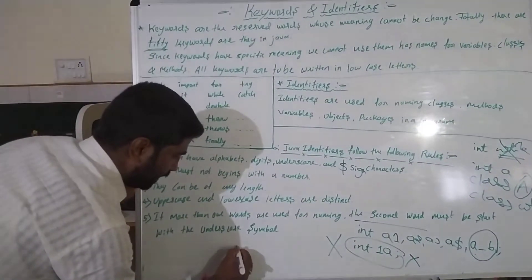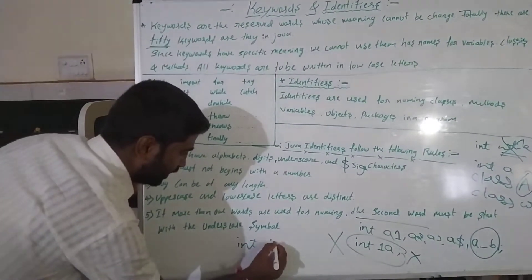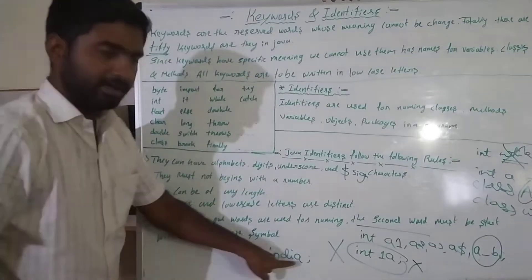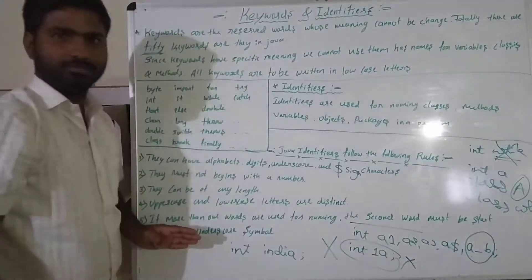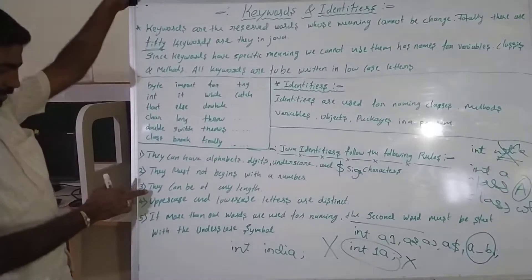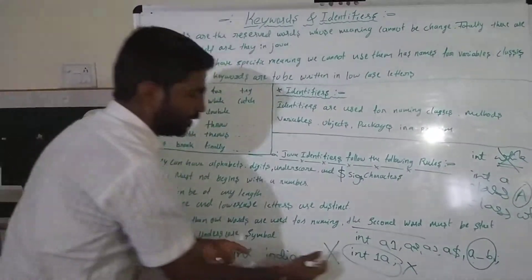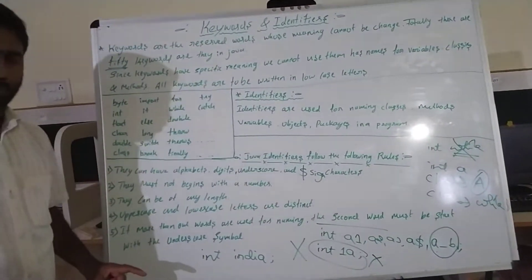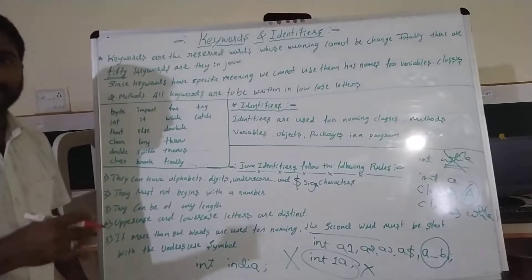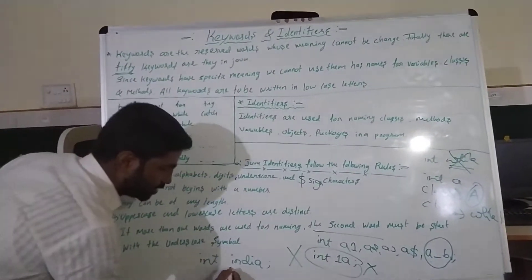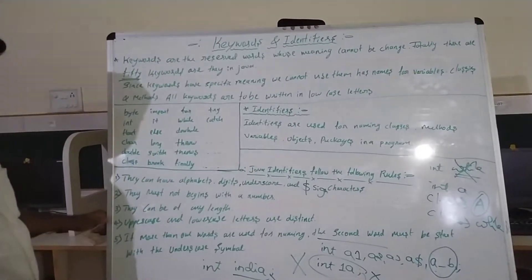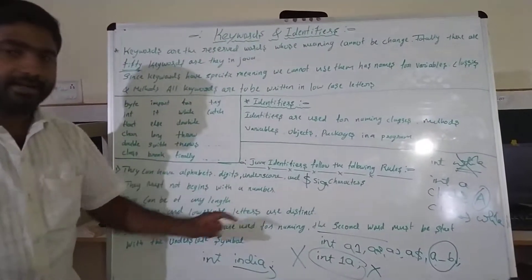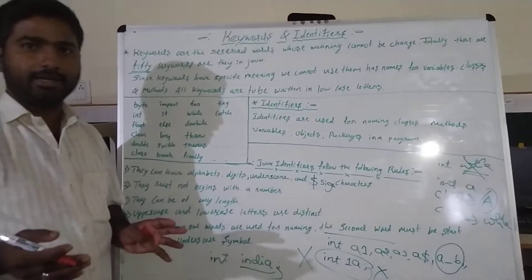Rule three: identifiers can be of any length. For example, a variable name like 'india' is valid regardless of its length.